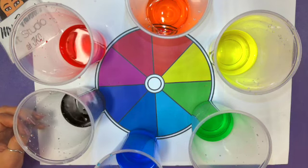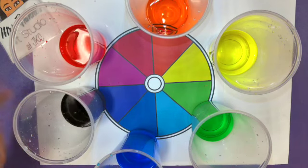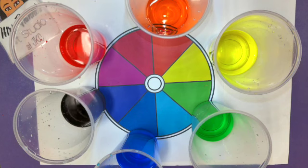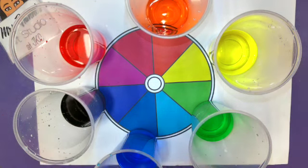So, we mix together two primary colors like red and yellow and blue. We get secondary colors like purple, orange, and green.